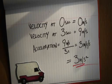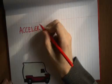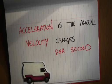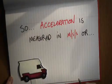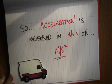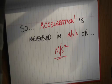So why is it measured in metres per second per second, or metres per second squared? Well, acceleration is the amount that velocity changes every second. So it's measured in metres per second per second, which can be simplified to metres per second squared.